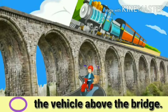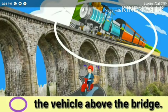In the next picture, we have to circle the object above the bridge. Here, the train is above and scooter is below. So we will circle the train.